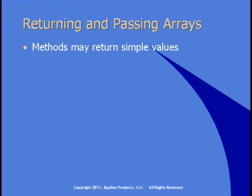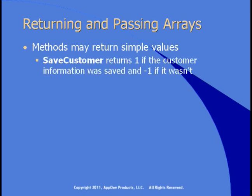Sometimes your methods might return simple values. For example, the saveCustomer method in the customer class returns a 1 if the customer information was saved and a negative 1 if it wasn't. These two values cover the cases. This method might also return true if the customer information was saved and false otherwise. Either way, a simple value: 1 or true if it worked, negative 1 or false if it didn't.